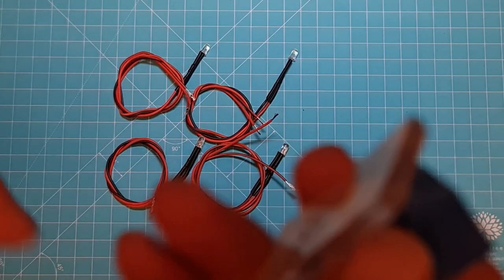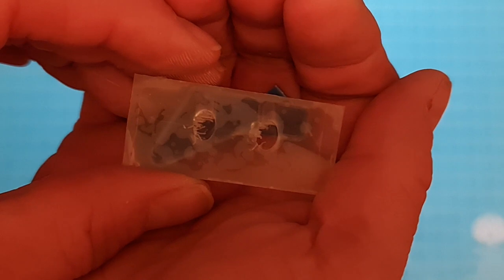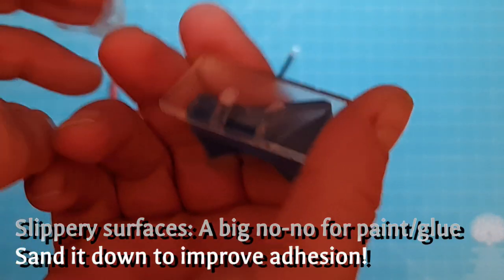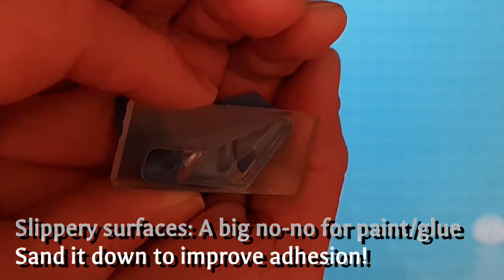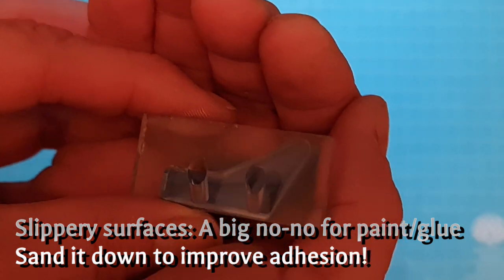Next up is to glue in the LEDs in the holders and to paint the backside. On the backside, there is some protective film. You just peel it off. But if you look here on the backside, it's almost like a mirror. And you're going to have problems to fix the paint. So let's do something about that first.